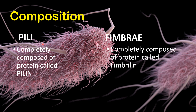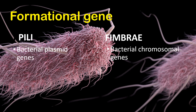Next is composition. Both pili and fimbriae are composed primarily of proteins, but pili have a different protein and fimbriae have a different protein. Pili are composed of a protein called pilin, while fimbriae are composed of a protein called fimbrin.